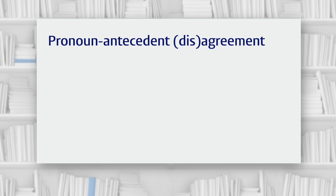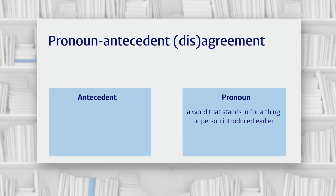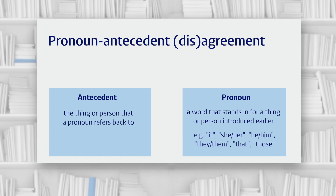The next issue we're going to look at is pronouns and antecedents, and whether they agree or not. First of all, let's understand what a pronoun is and what an antecedent is. Pronouns are words that stand in for things or people that have already been introduced earlier — so words like 'it,' 'she,' 'her,' 'he,' 'him,' 'they,' 'them,' but also 'that' and 'those.' The antecedent is the thing or the person that the pronoun refers back to — the thing or person that was introduced earlier.